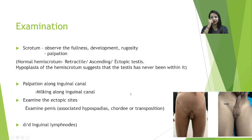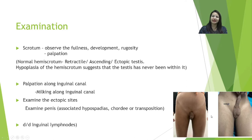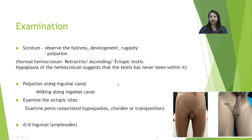The hemiscrotum can appear normal in retractile, ascending, or ectopic testis cases. If the hemiscrotum is poorly developed or hypoplastic — small, light-colored, with highly reduced rugosity — this is an indirect marker that the testis has never descended into the scrotal sac. You then palpate to confirm whether both testes can be appreciated in the scrotum.